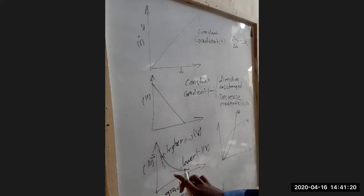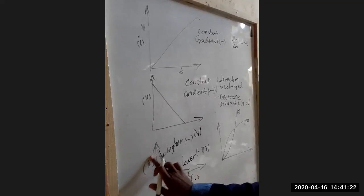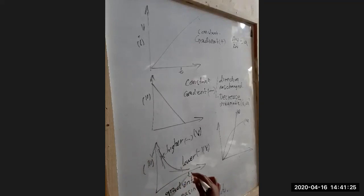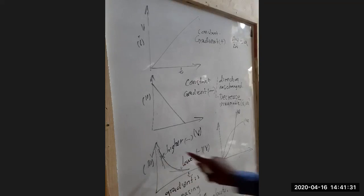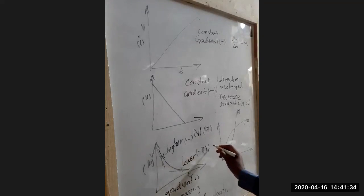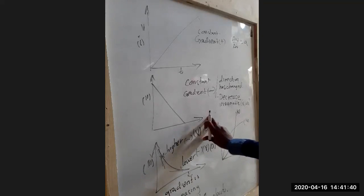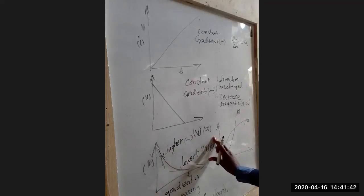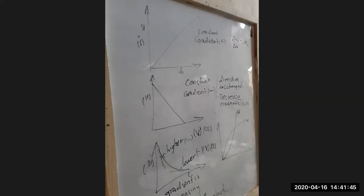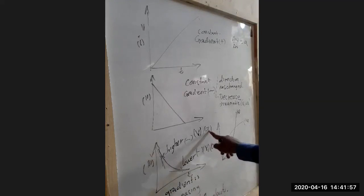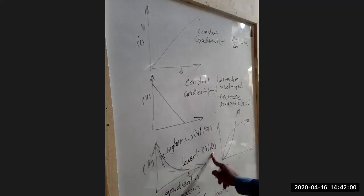If this was a velocity-time graph, then the gradient here is going to be acceleration. So that will mean that at this point acceleration is high and at this point acceleration is low, meaning it started with a high acceleration then reduced. Because it is negative we say the body is moving with decreasing acceleration. If the acceleration is decreasing then the body is decelerating, so on a velocity-time graph the body is moving with a decreasing acceleration.